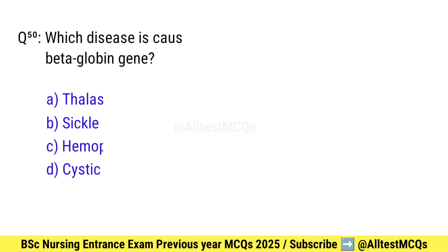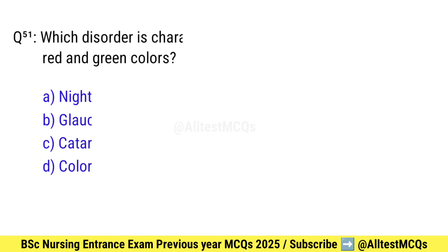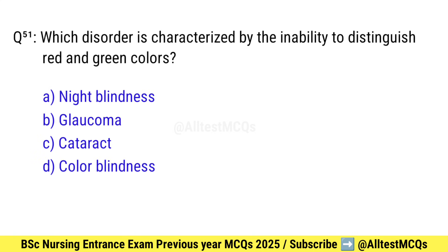Question number 50. Which disease is caused by a single point mutation in the beta-globin gene? Correct option is B: Sickle cell anemia.